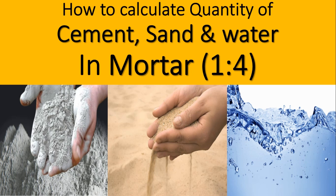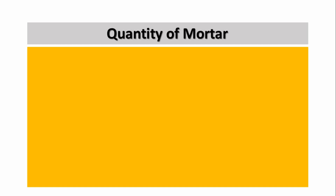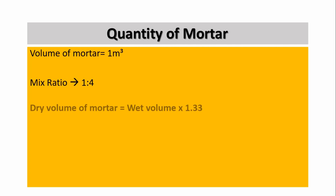Hey guys, welcome to Visible Engineers. In this video I am going to teach you how to calculate the quantity of cement, sand, and water in a mortar of 1:4 ratio. I am assuming the volume of mortar is 1 meter cube. As we know, the mix ratio is 1:4, where 1 is the cement and 4 is the sand.